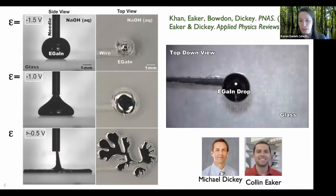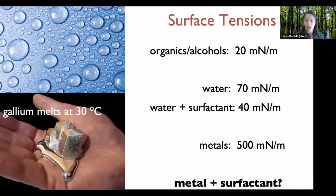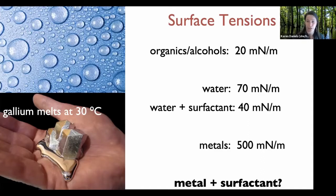This is surprising because if we think of water as having a high surface tension — around 70 mN/m — adding a surfactant can drop that by about half. But metals commonly have surface tensions of several hundred mN/m. So what is the surfactant that's dropping the surface tension that dramatically, and why is it triggered by applying a voltage in an electrolyte? That's the question we are still working on.